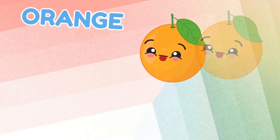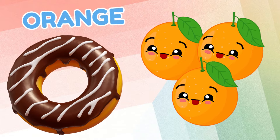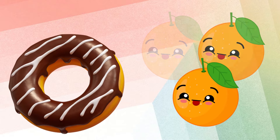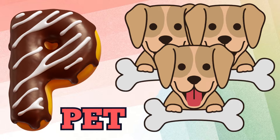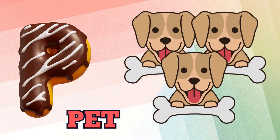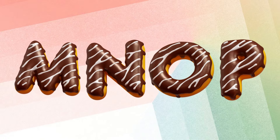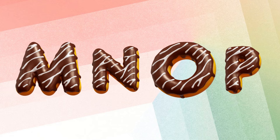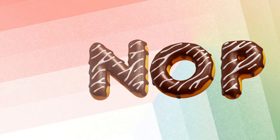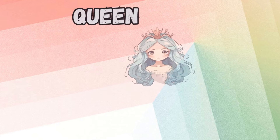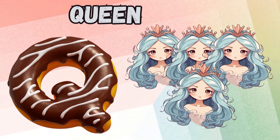O is for orange, o-o-orange. P is for pet, p-p-pet. Q is for queen, qu-qu-queen.